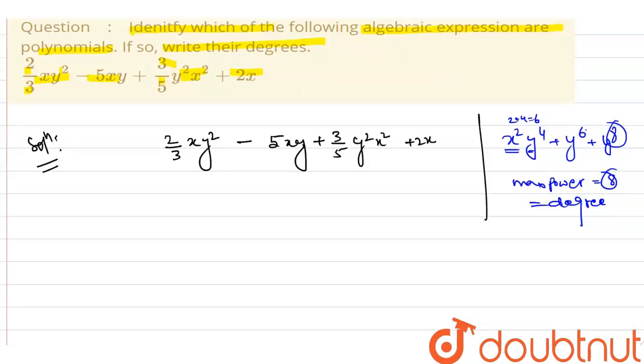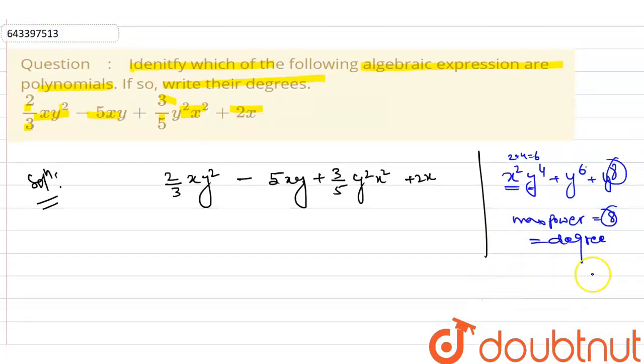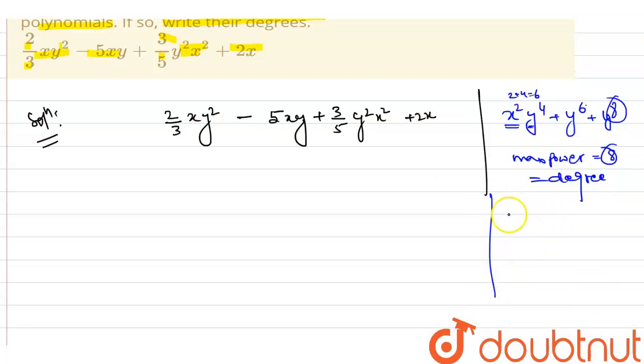I am taking another example by which you can easily understand. If you have x square y cube plus xy square plus y square x square, two plus three will be five. Here one, one plus two will be three, two plus two will be four. So which one is greater? Five is the greatest term. Five is the greatest power. So our degree will be five.